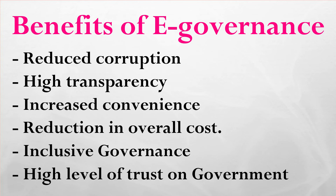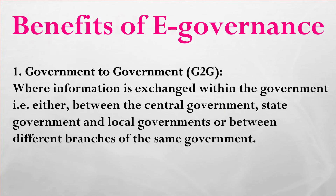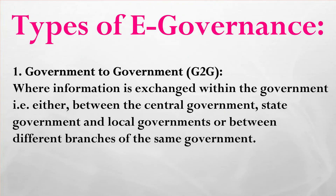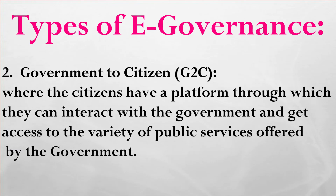Now let's discuss some important types of e-governance. First, Government to Government (G2G): information is exchanged within the government — either between the central government, state government, and local governments, or between different branches of the same government. Second, Government to Citizens (G2C): citizens have a platform through which they can interact with the government and get access to a variety of public services offered.